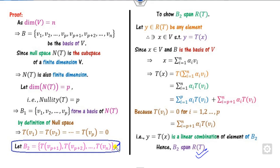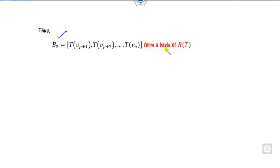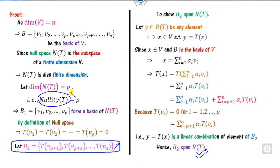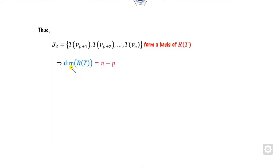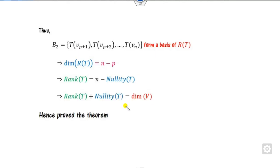Hence B2 is both linearly independent and spans R(T), so B2 is a basis of the range space. The number of elements in B2 is N minus P. Since P is the nullity and the dimension of the range space is the rank, we have rank + nullity = N, which is the dimension of V. This completes the simple proof of the rank nullity theorem.